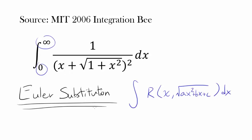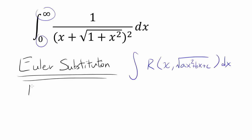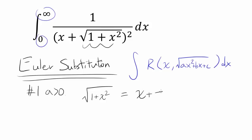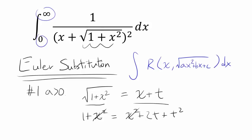There are three ways of applying Euler substitution. For our case, we are going to use Euler substitution number one, which applies when a is greater than zero. We let our expression square root of 1 plus x squared — that's the radical, that's the problem part — equal x plus t. When you square both sides, you get 1 plus x squared equals x squared plus 2xt plus t squared, and the x squared terms cancel out.